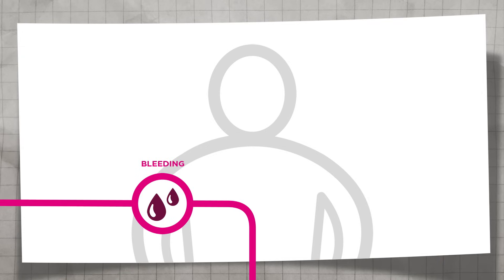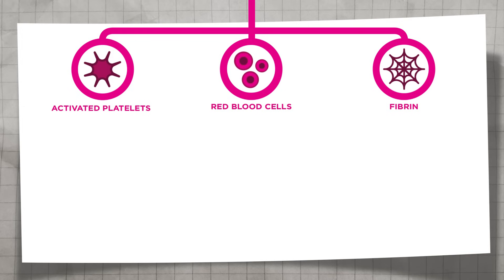Hemostasis is the normal physiological response to limit blood loss after vascular injury. Blood clots are made up of activated platelets, red blood cells, and fibrin which hold the clot together.